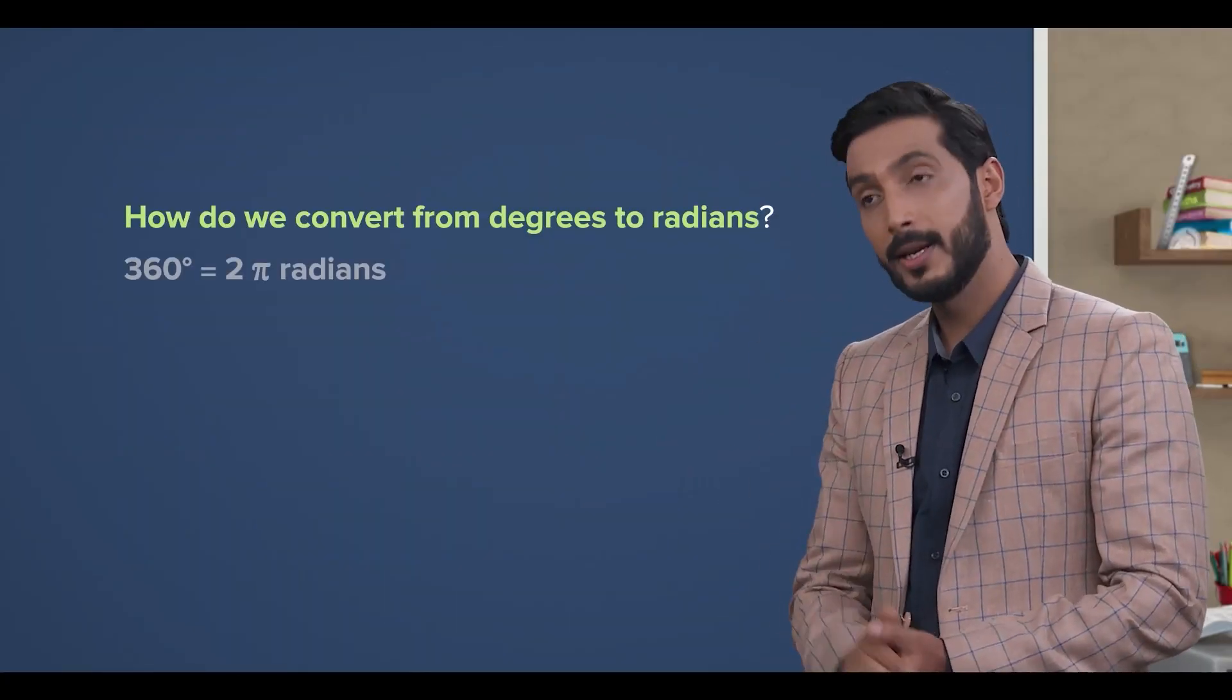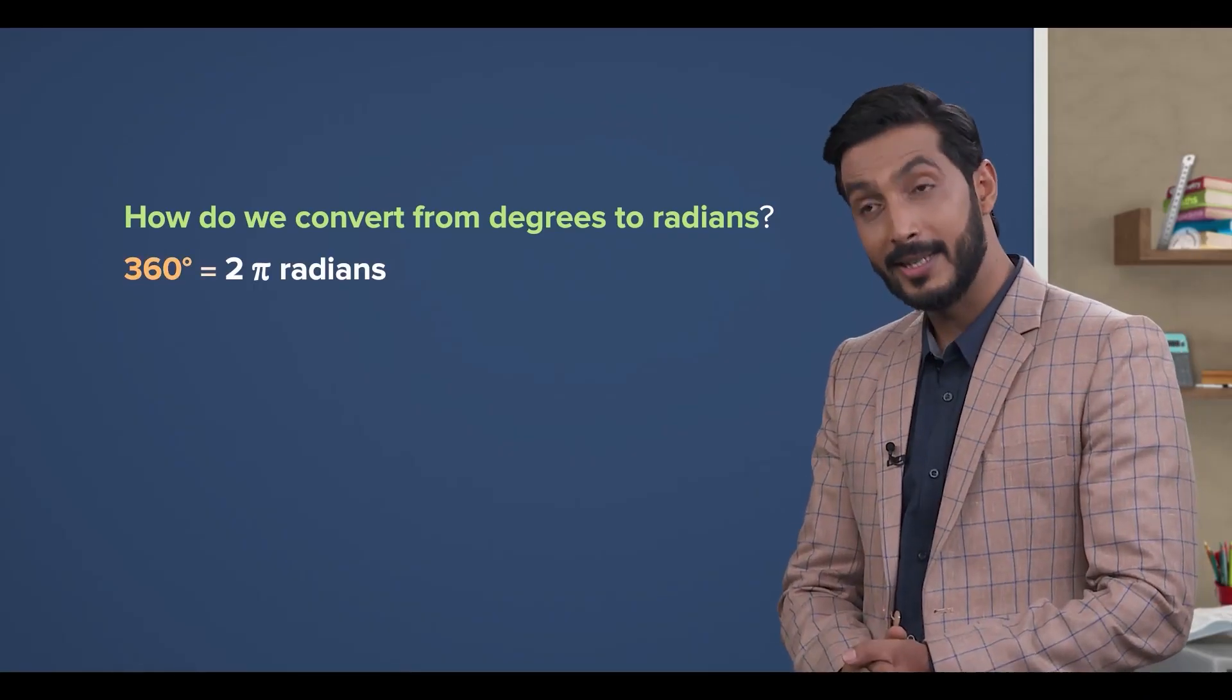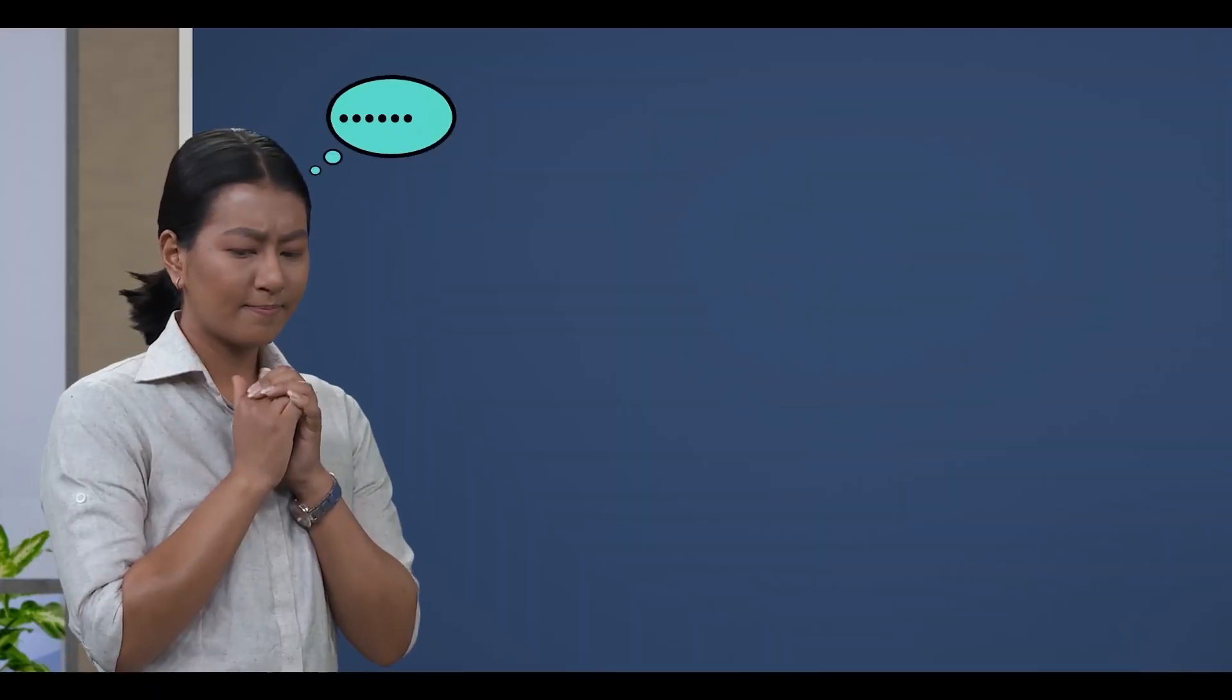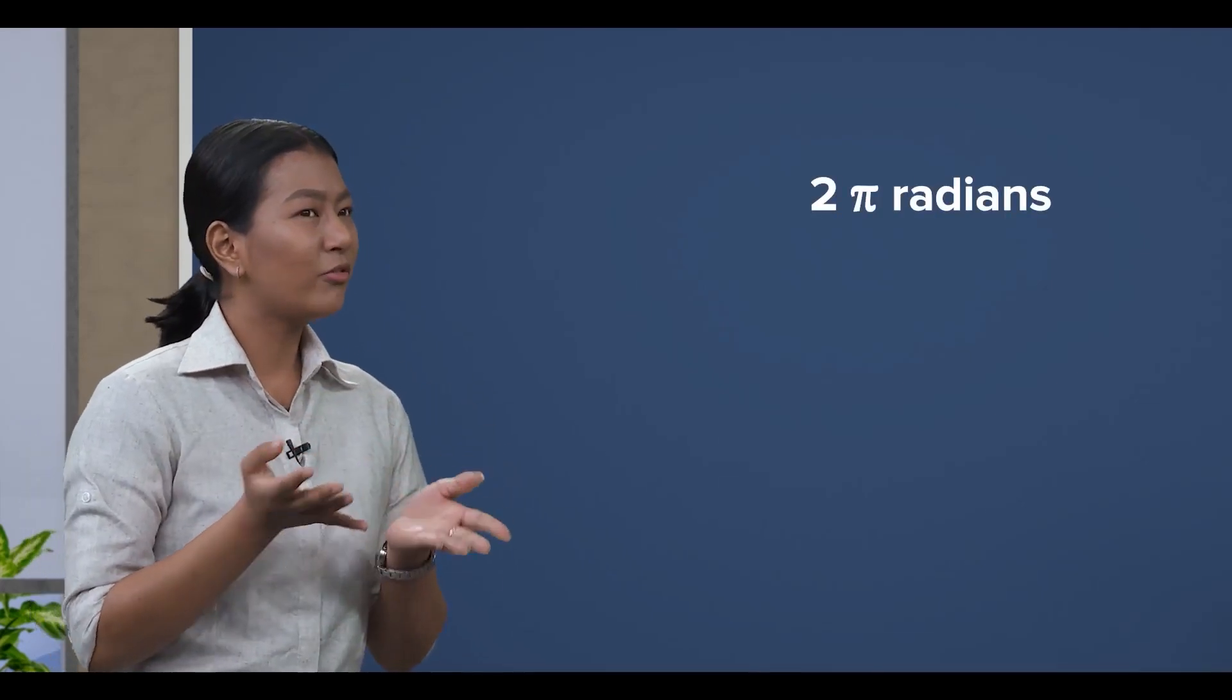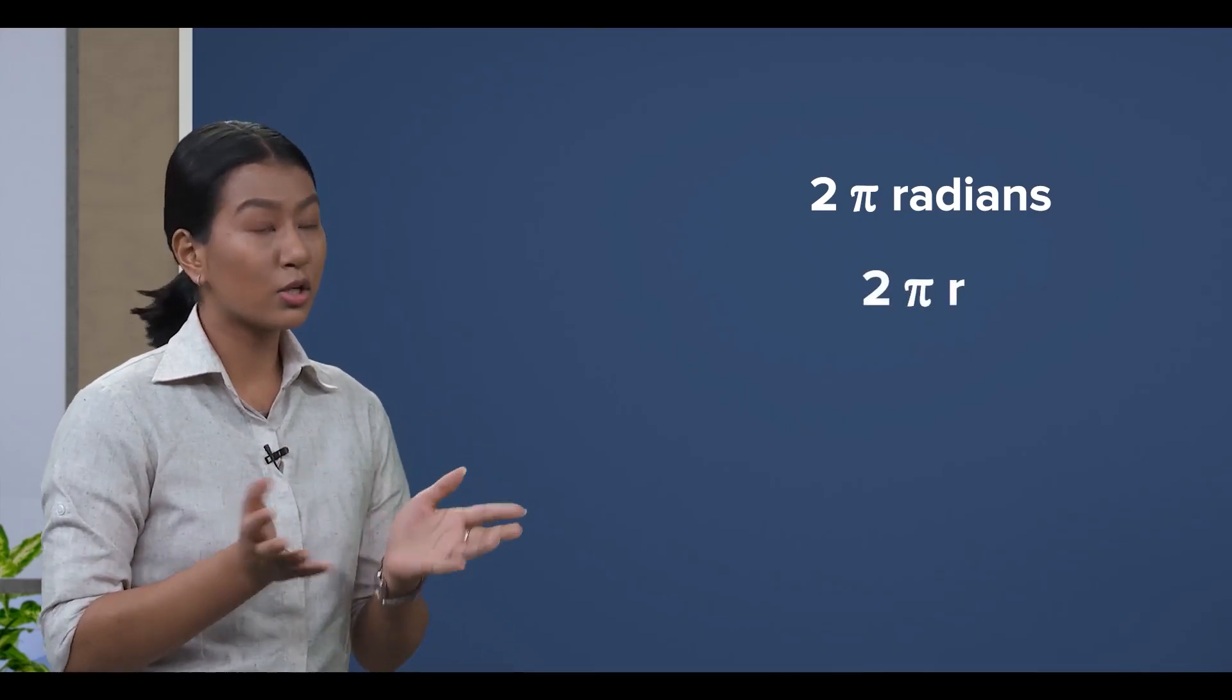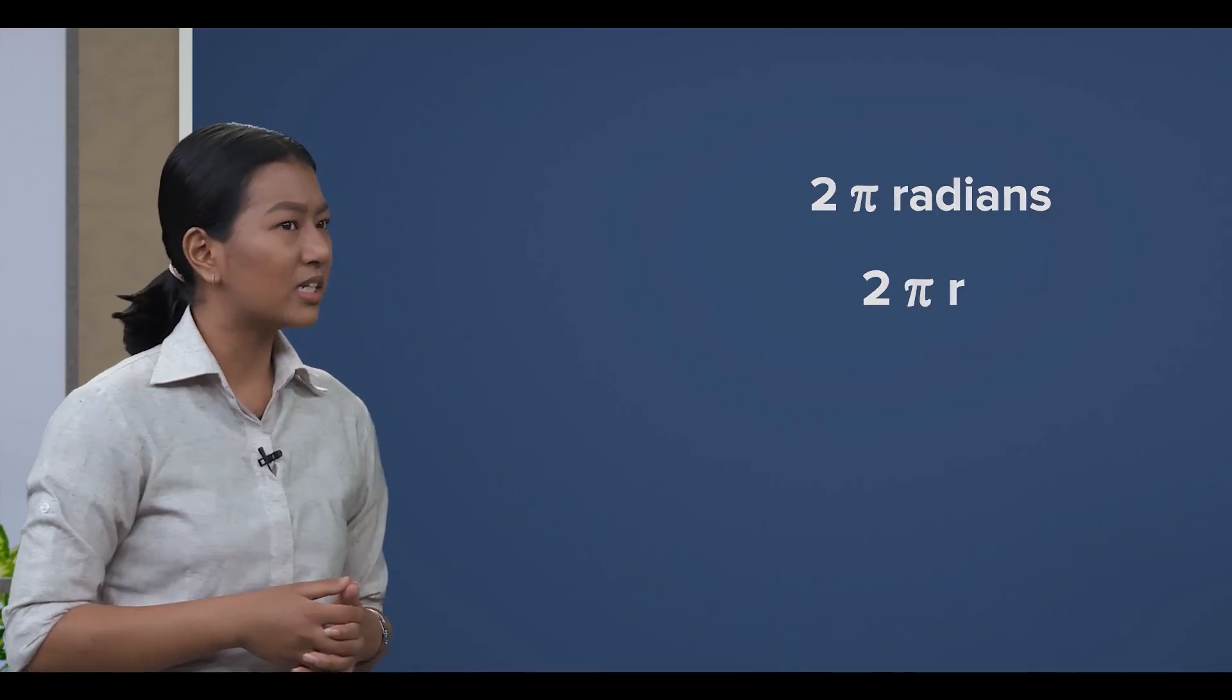Easy. Just remember that 360 degrees is equal to 2 pi radians. Hmm. Hang on, teacher. 2 pi radians reminds me of 2 pi r, the circumference of a circle. Are they both related?